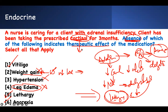Question analysis is your key. Break the question down — absence, cortisol, therapeutic effect. With adrenal insufficiency, vitiligo will be resolved, lethargy will be resolved, and anorexia will be resolved. They have no weight gain because they have weight loss from the beginning. Hypertension is not going to resolve because they have hypotension. They have no leg edema and may rather develop it. The keywords in the question are 'absence' and 'therapeutic.'